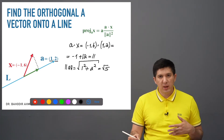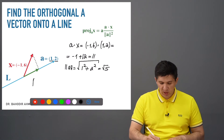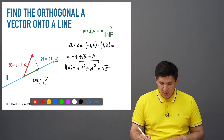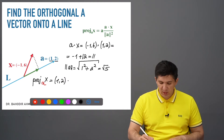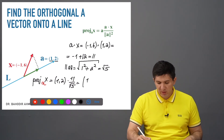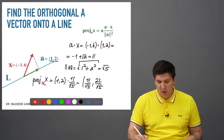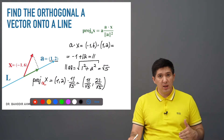Now we just plug everything into the formula and find the projection. The projection vector of x onto a equals the vector (1, 2) multiplied by the constant 11 divided by the square root of 5. Multiplying through, it is going to be (11 over root 5, 22 over root 5). That is the orthogonal projection of vector x onto this line.